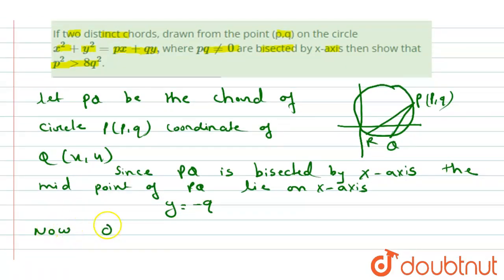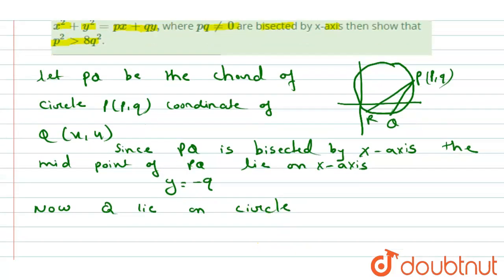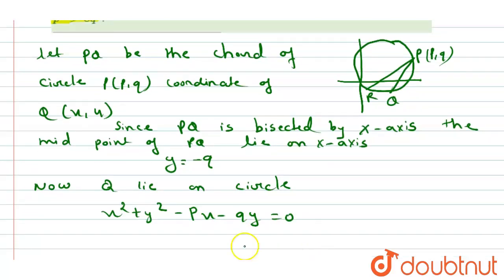Now Q lies on the circle. In this condition, we have the equation x² + y² - px - qy = 0. This is already given to us.